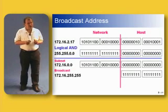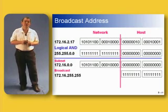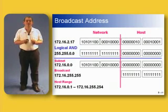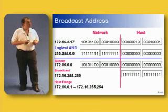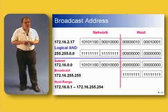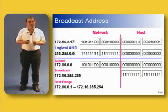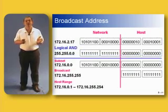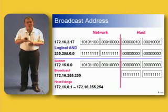If we've got the subnet address and the broadcast address, we can determine the applicable host range for this particular subnet. It's one after the subnet address and one before the broadcast address. Therefore, the host range for this network is 172.16.0.1 all the way up to 172.16.255.254. So just by being given the IP address and subnet mask, we can work out the subnet address, the broadcast address, and the host range applicable for that particular subnet.